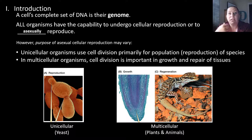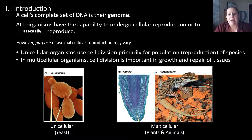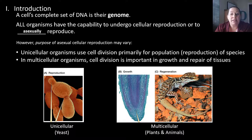In this picture we see that in a unicellular yeast cell, reproduction is about creating more population. Whereas in plants and animals, which are multicellular, it's for growth — the picture shows an onion root tip growing. And also for repair, what we consider regeneration, like a lizard that has lost its tail in the past and it grows back.